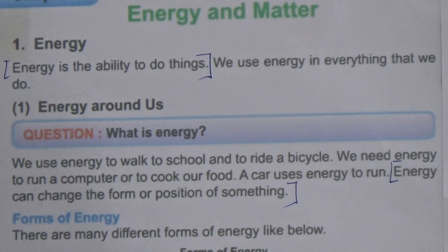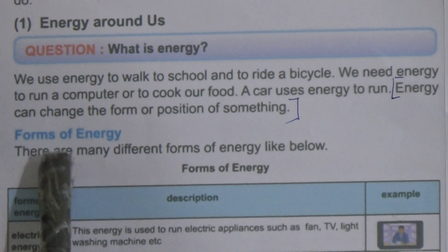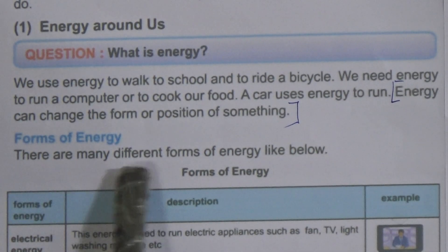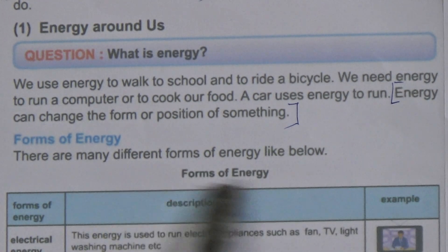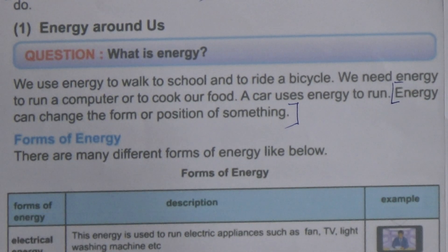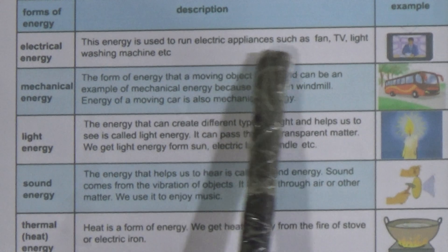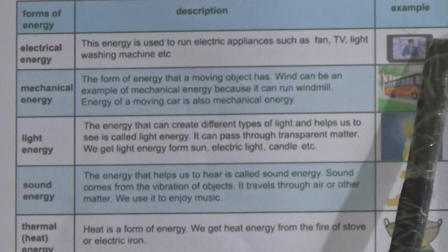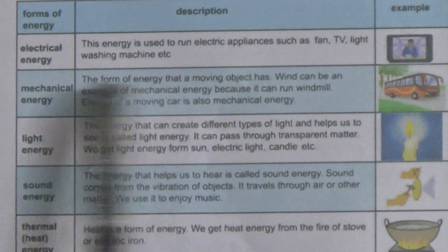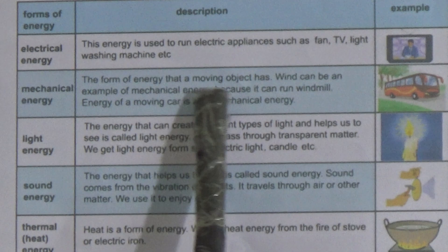With these two lines you can give the answer to 'what is energy.' Now let's come to the forms of energy. There are many different forms of energy. The first form is electrical energy — the energy used to run electric appliances such as fan, TV, light, washing machine, etc. The example given is a television.